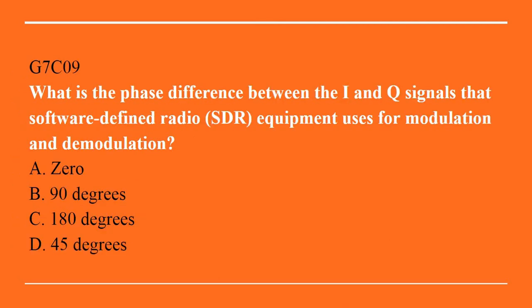G7C09: What is the phase difference between the I and Q signals that software-defined radio equipment uses for modulation and demodulation? A. Zero. B. 90 degrees. C. 180 degrees. D. 45 degrees. Answer is B. 90 degrees.